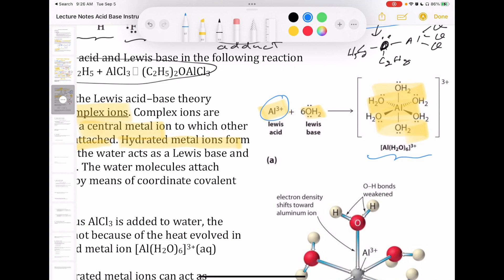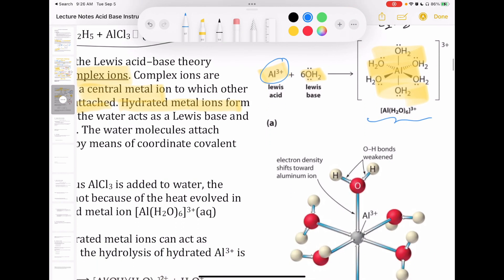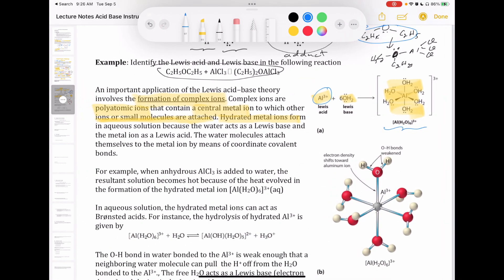So in Chem 11, we had sort of simplified situations by saying that the aluminum ion exists on its own, but in reality, it's actually surrounded by the water molecule. And so that's what we call a hydrated metal ion. In this case, the aluminum is a Lewis acid because it's accepting electron, and water acts as a Lewis base.